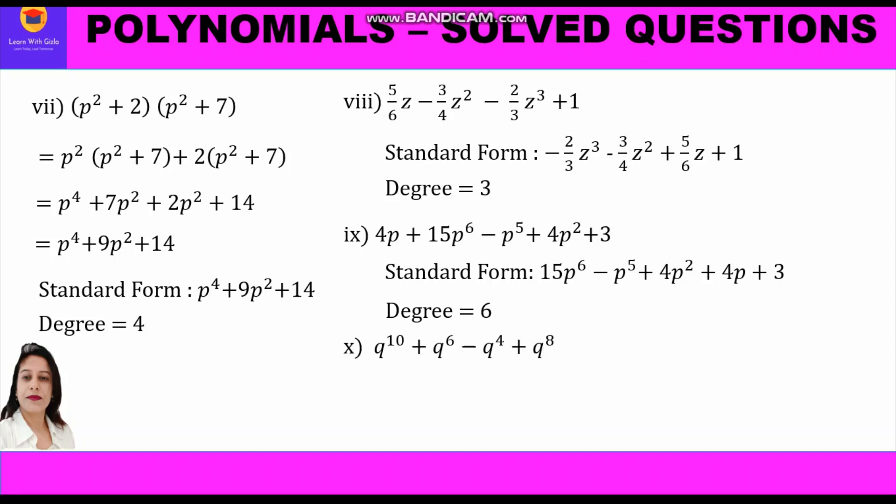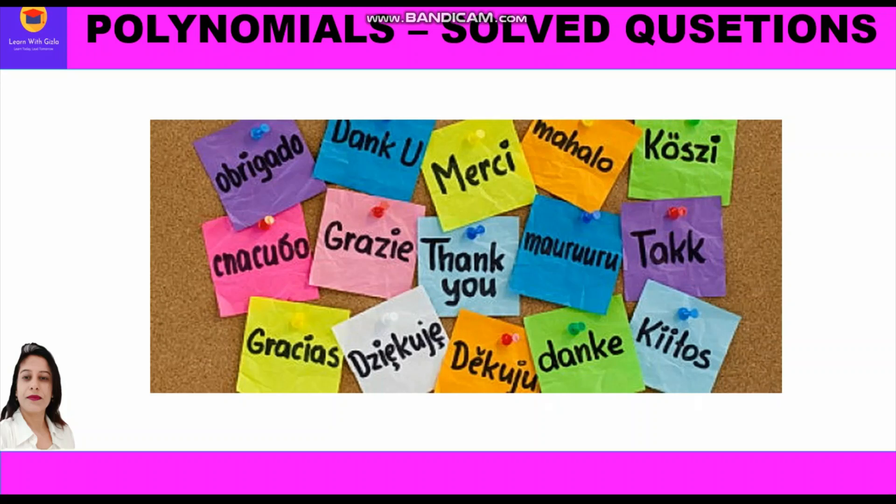Part 10: q¹⁰ + q⁶ − q⁴ + q⁸. Rearranging in decreasing order: q¹⁰ + q⁸ + q⁶ − q⁴. The highest power is 10, so the degree is 10. Hope you have understood these two types of questions. Thank you everyone.